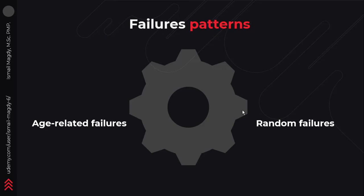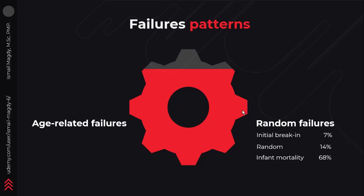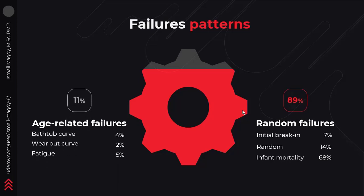So now we have two types of failure patterns: random failures and age-related failures. Under random failures, the initial break-in failure curve is responsible for 7% of failures, the random curve for 14%, and infant mortality for 68%. This means that random failures represent 89% of the total failures, while age-related failures are just 11%, distributed as 4% for the bathtub curve, 2% for the wear out curve, and 5% for the fatigue curve.